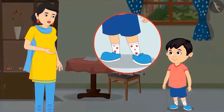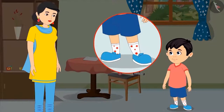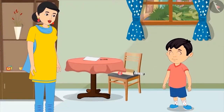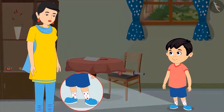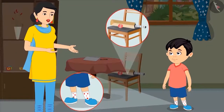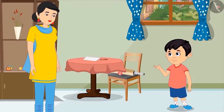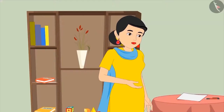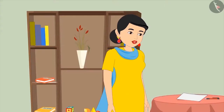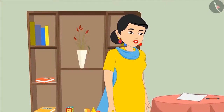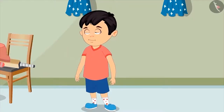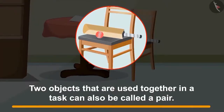Mom says, 'Your pair of star socks looks very good.' Chotu thanks her and asks, 'Do you know that just like these socks are in a pair, your bat and ball are also in a pair?' Chotu asks, 'But how, Mom? These socks look the same and I wear them together — that's why they are in pairs. How are the bat and ball a pair?' Mom explains, 'You use the bat and the ball together while playing cricket, don't you? That means two objects which are used together in a task can also be called a pair.'